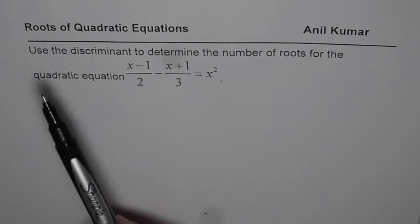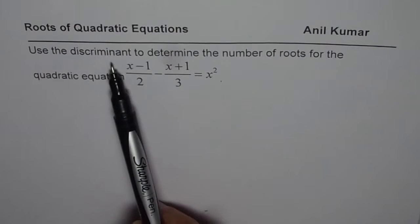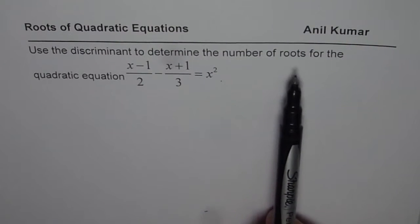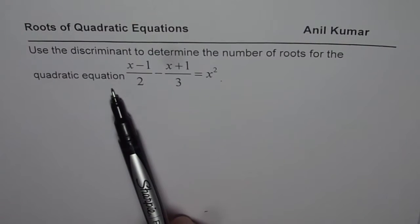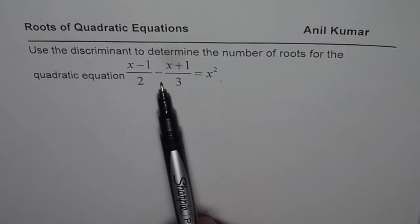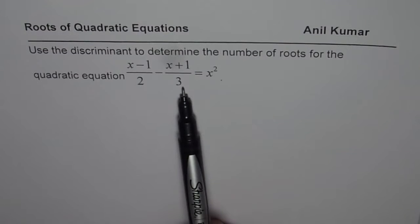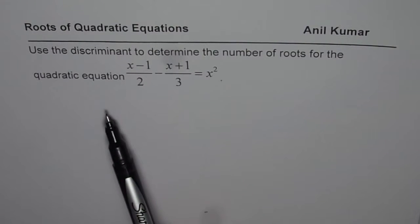The question here is: use the discriminant to determine the number of roots for the quadratic equation x minus 1 divided by 2 minus x plus 1 divided by 3 equals x squared.